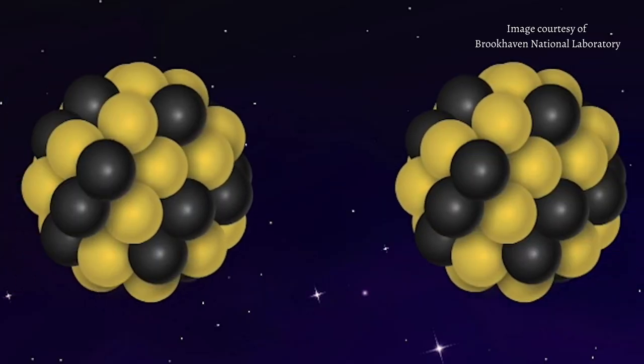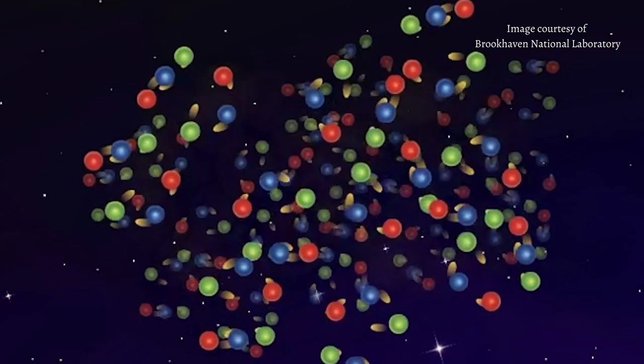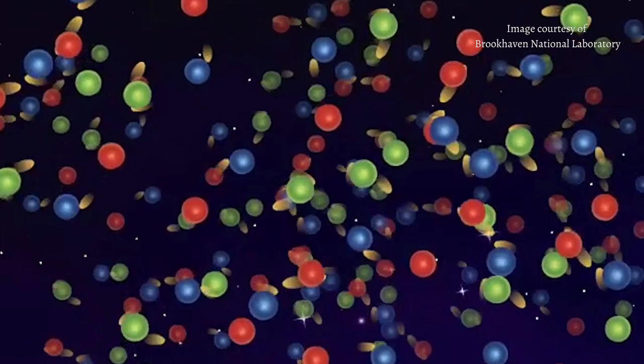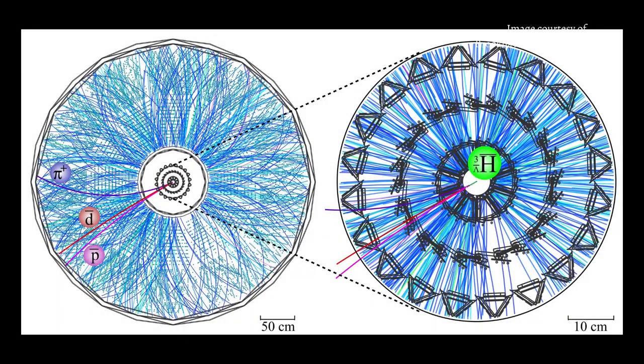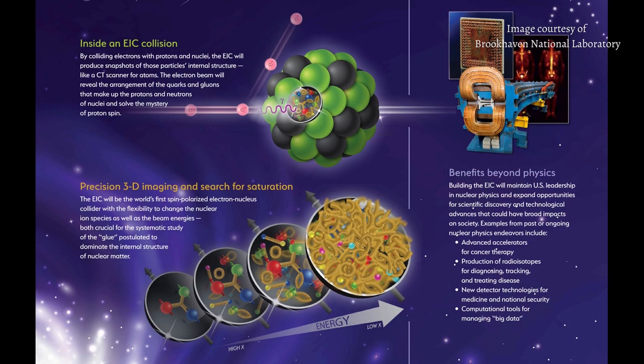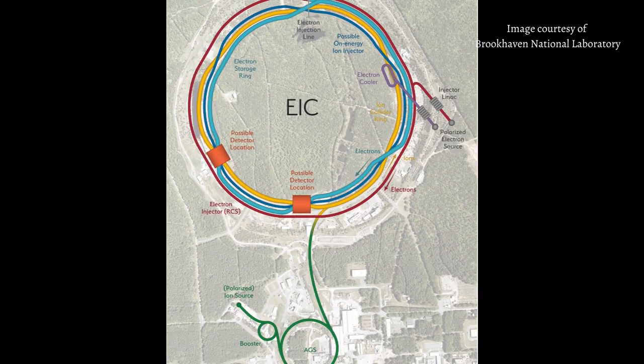At RHIC, scientists accelerate gold ions to 99.995% of the speed of light in two accelerator rings. We have two clouds of photons moving in opposite directions with enough energy and intensity that when the two ions graze past each other without colliding, those photon fields can interact.